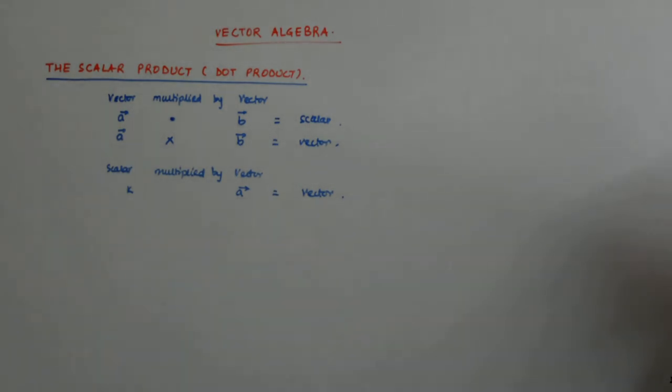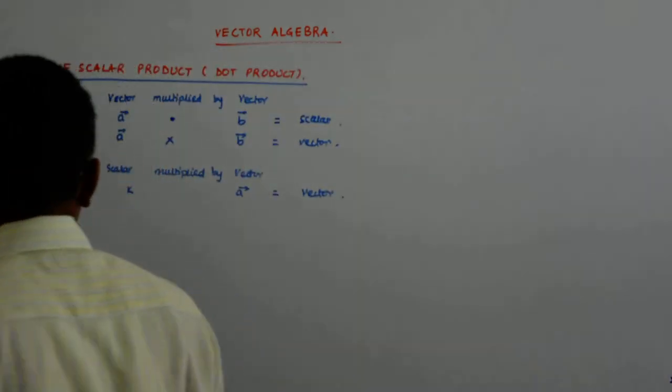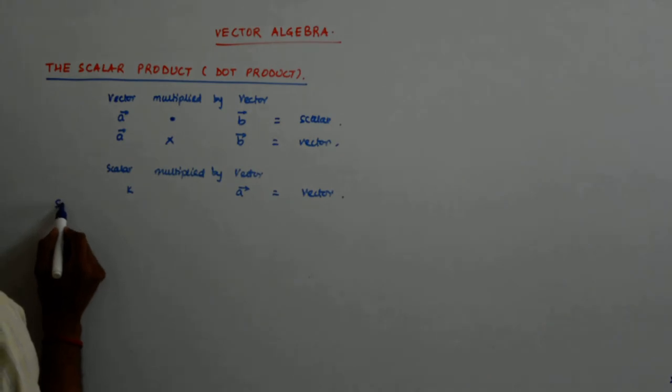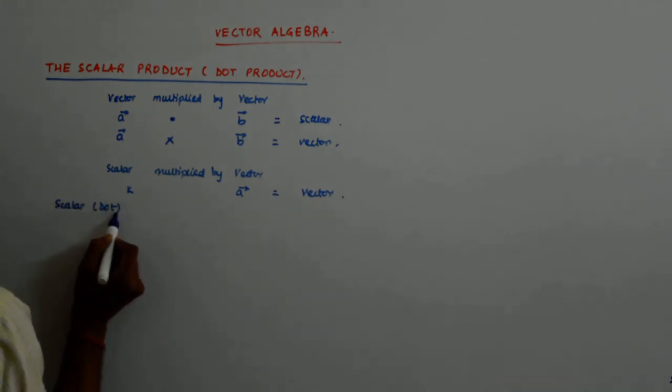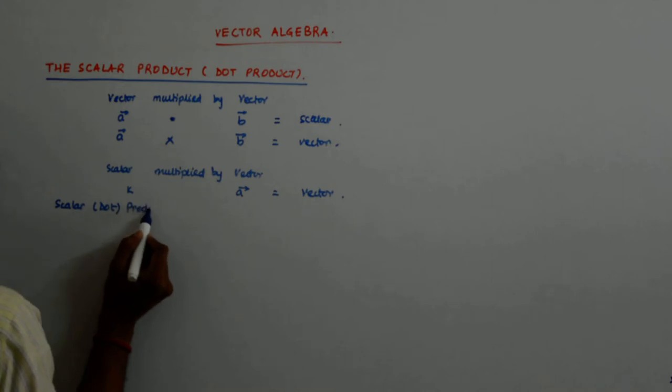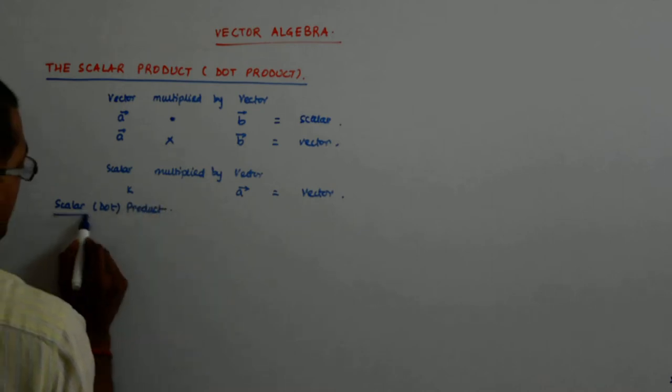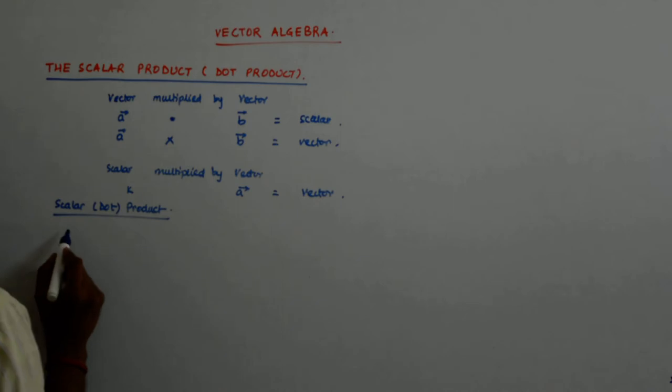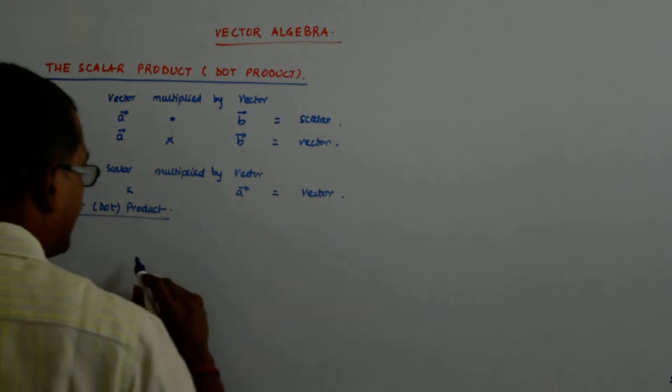So, we are right now doing the scalar product. So, scalar or the dot product. How is it defined?